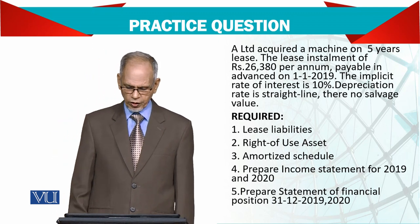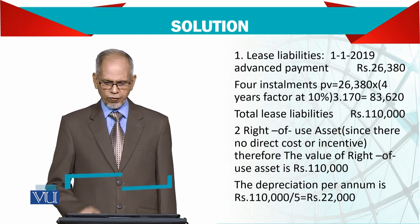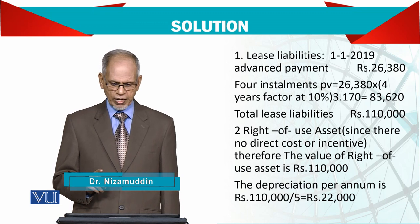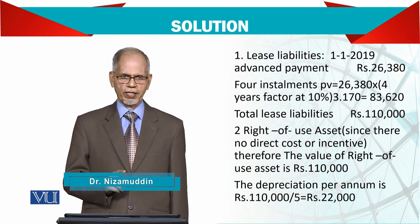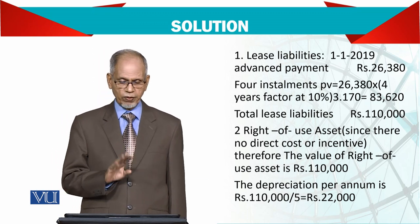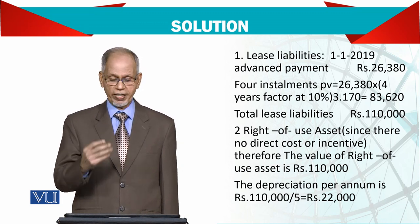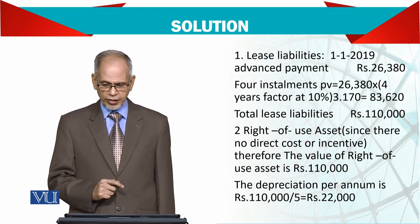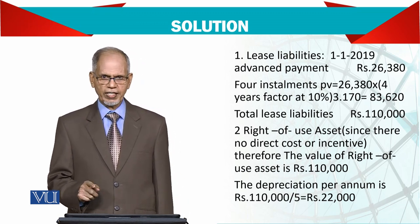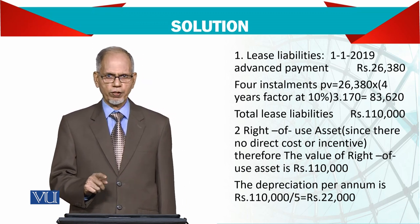We need to work out the lease liability first. The first payment is made on 1st January 2019: 26,380. The remaining 4 payments of 26,380 are multiplied by the 4-year annuity factor. Although the lease is 5 years, the factor is used for 4 years because one payment is already made. So 26,380 plus 83,620 gives total lease liabilities of 110,000.